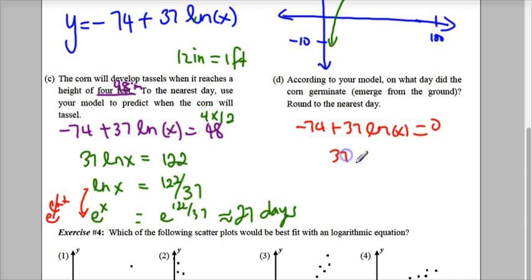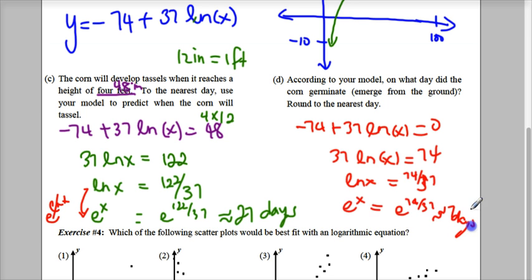ln of x is equal to 74 over 37. Oops. And then I have e to the x is e to the 74 over 37, which is approximately 7 days. Okay?